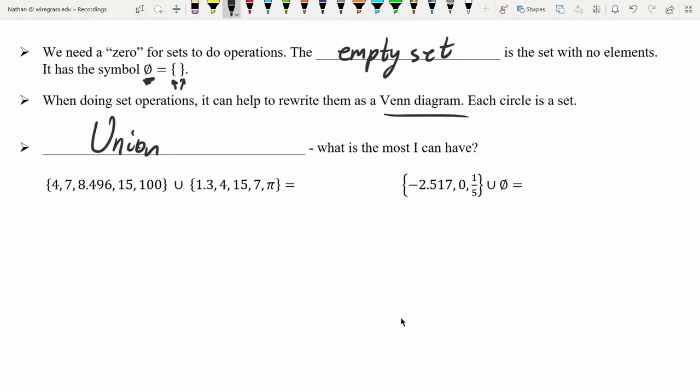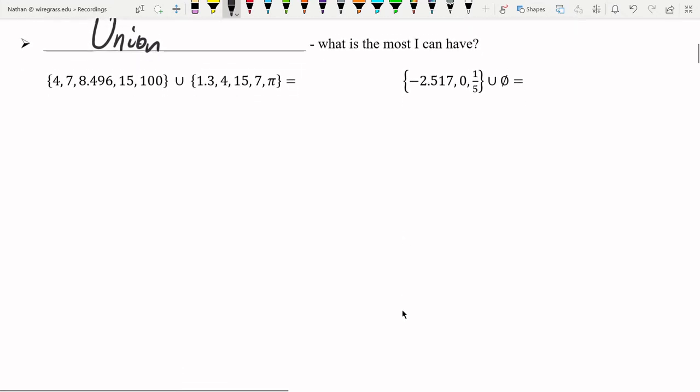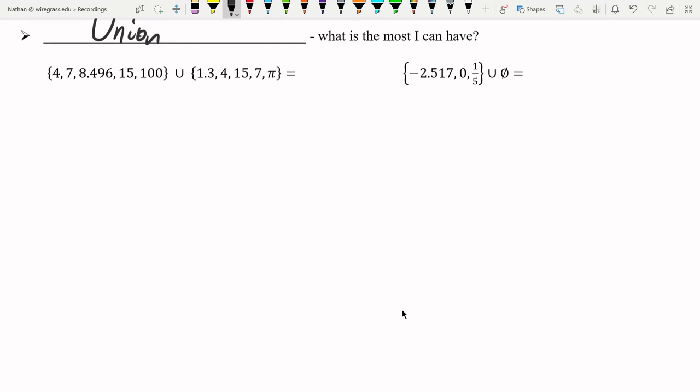The union is asking, what's the most I can have? You're taking everything you can from each set possible. So let's go ahead and draw these sets as a Venn diagram.